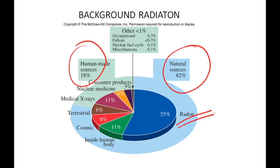The largest source of background radiation is radon. Other sources include radiation from the land, cosmic radiation from outer space mostly from the sun, and inside the human body from eating elements that have natural radioactive isotopes. Human-made sources include consumer products such as smoke detectors, nuclear medicine for diagnostic or treatment purposes, and x-rays.